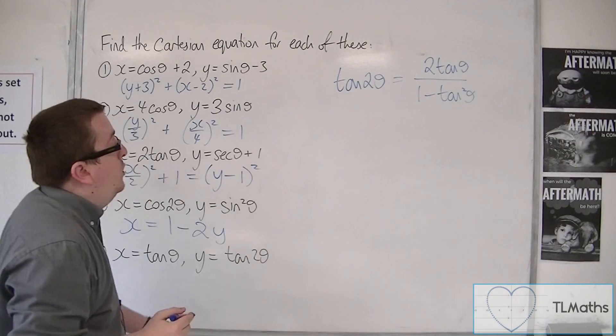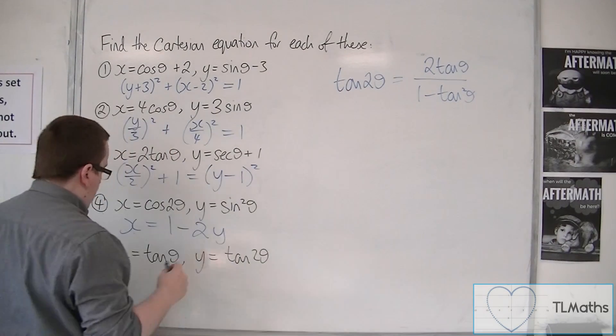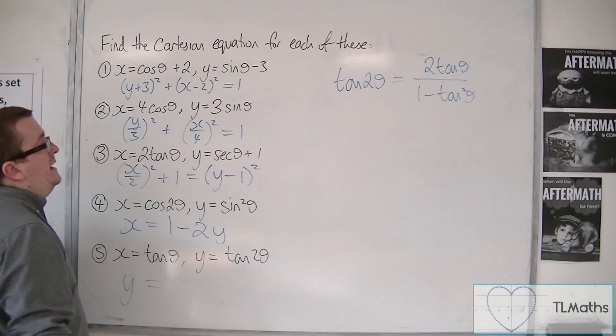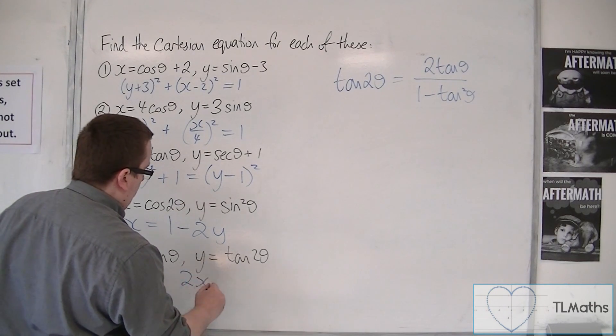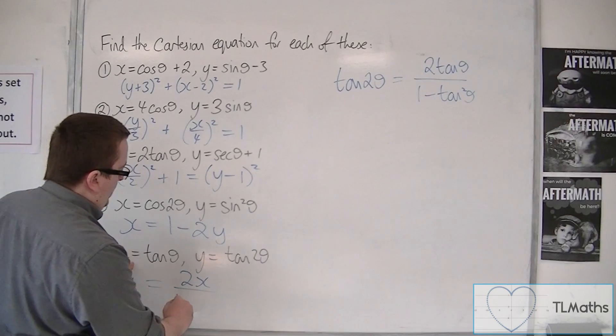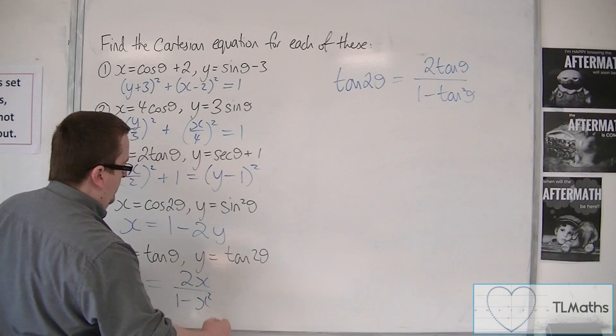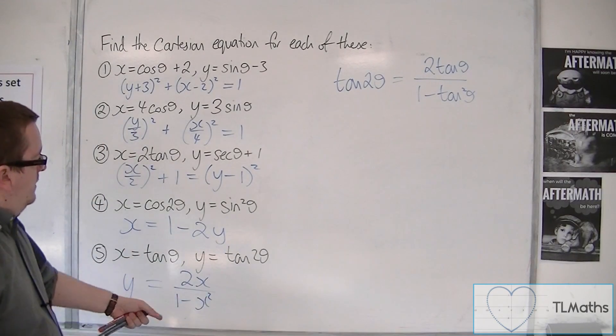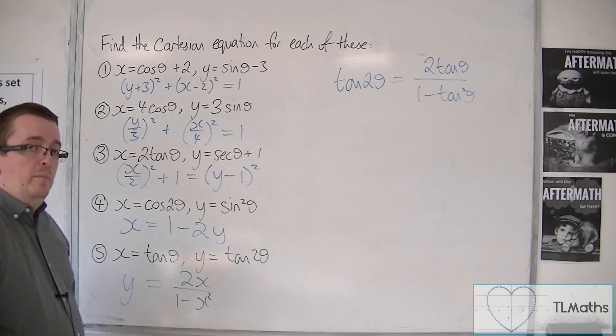So that means that y, which is the tan 2 theta, is equal to 2 lots of tan theta, so 2 lots of x, over 1 minus tan squared, so 1 minus x squared. And that is the Cartesian equation for number 5.